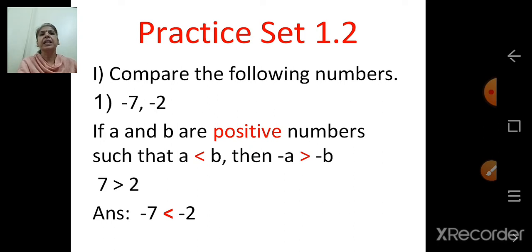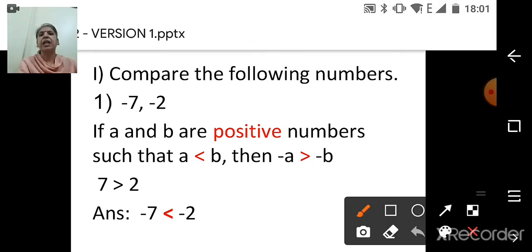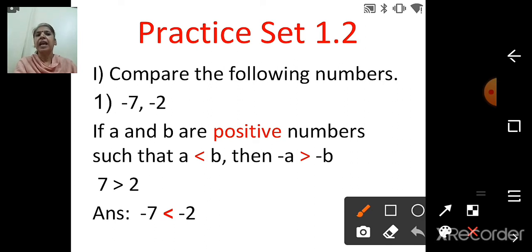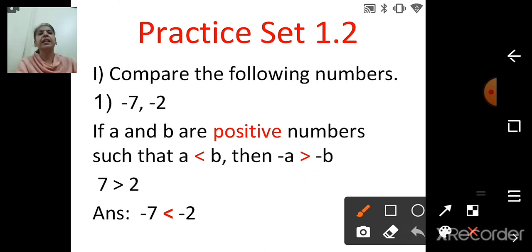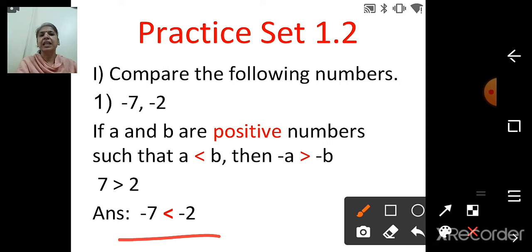Let's start with Practice Set 1.2. Compare the following numbers: negative 7 and negative 2. Both numbers are negative. If a and b are positive numbers such that a is less than b, then negative a is greater than negative b. Since 7 is greater than 2, negative 7 becomes less than negative 2. So the answer is: negative 7 is less than negative 2.